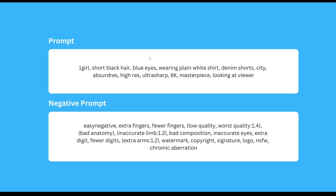To give you an apples-to-apples comparison, we're going to use the same prompt for each platform. It's a pretty simple prompt: one girl with short black hair, blue eyes, wearing a plain white shirt, denim shorts. I'm sure you can generate a much better looking image if you refine this further, but for this video, let's just keep things simple.